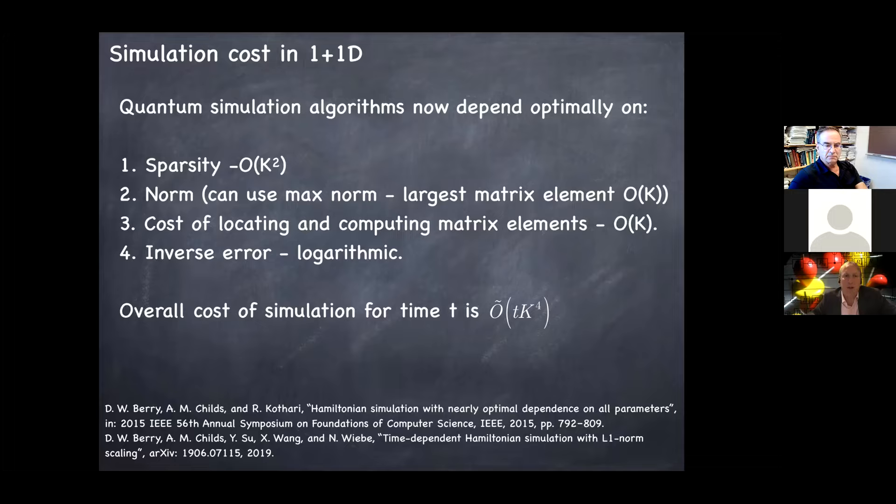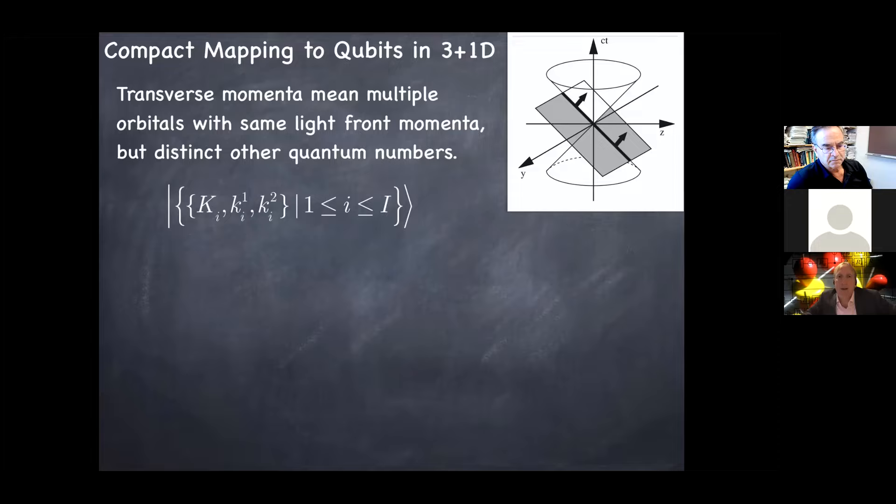And the remarkable thing about these methods is they scale logarithmically in the inverse error. So they scale like the number of digits of precision you need in reproducing the time evolution of the operator, which is truly, truly a remarkable property. And these are the references here. So the great thing is that we can just use these maximally efficient things. And the only work we have to do is in two and three, which is bounding the max norm and finding and calculating the matrix elements, which for this model we've done in our paper. And one other thing you might want to do is do adiabatic state preparation where you're turning on interaction slowly. And again, thanks to this paper by Berry, Childs, Su, Wang, and Wiebe, you know, we again have methods that scale just with the total adiabatic time big T.